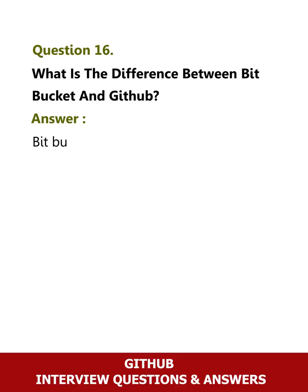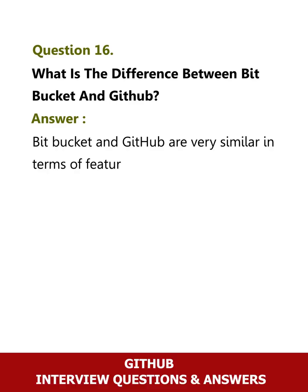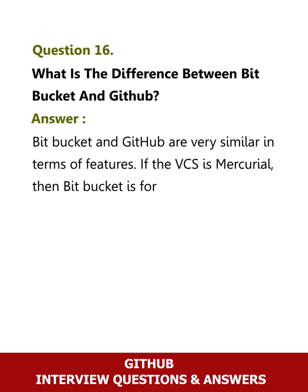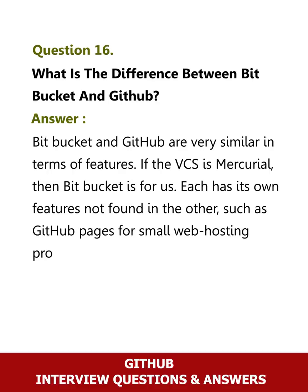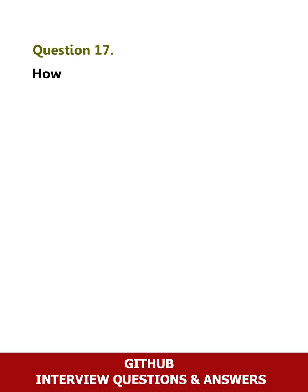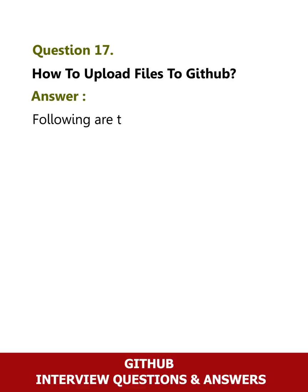Question 16: What is the difference between Bitbucket and GitHub? Answer: Bitbucket and GitHub are very similar in terms of features. If the VCS is Mercurial, then Bitbucket is the choice. Each has its own features not found in the other, such as GitHub Pages for small web hosting projects or Bitbucket's Jira integration.